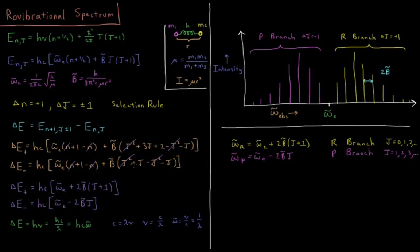So for delta E plus, we have delta E plus equals hc omega_e plus 2 b bar times j plus 1. Delta E minus equals hc omega_e bar minus 2 b bar times j.